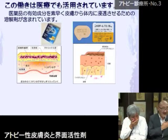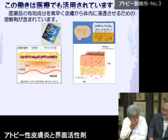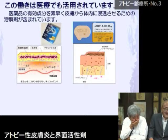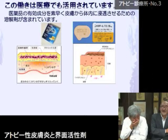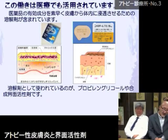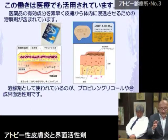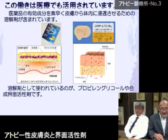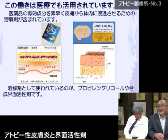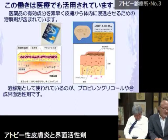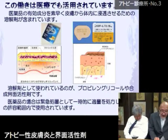例えばタバコをやめるときに使われるニコチンパッチや、心臓病の人が使うニトログリセリンの皮膚吸収製剤があります。数秒で効果が出るほど皮膚からの吸収は速い。実はここに界面活性剤、プロピレングリコールや合成洗剤の界面活性剤が皮膚への浸透促進に使われています。ただし医療品の場合は緊急処置として一時的に適量を処方し、安全な許容範囲内で使用されています。